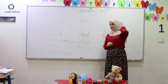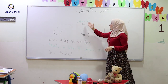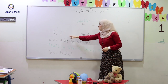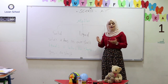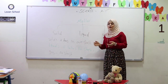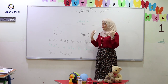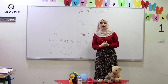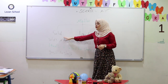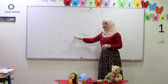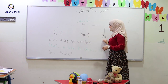Guys, be careful. We have three types or forms of matter. What's matter? Matter is everything around us that takes up place. Now, we will describe these three states of matter. We have solid, liquid, and gas.